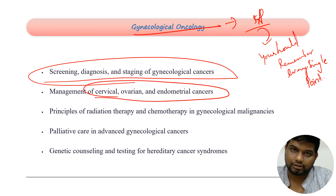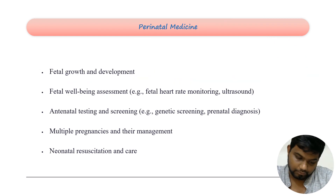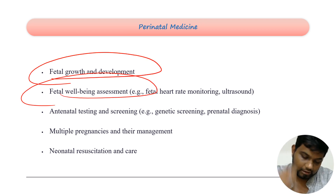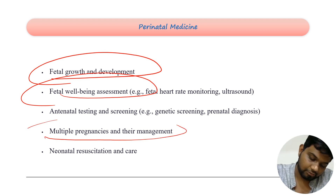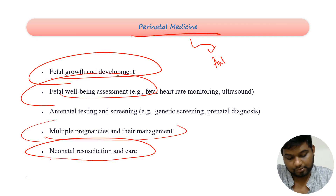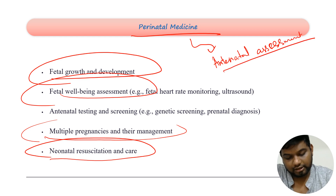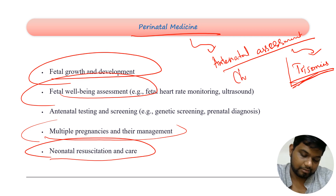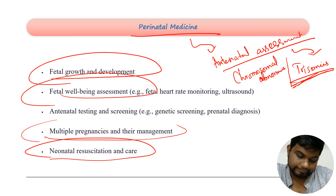In perinatal medicine, you need to know fetal growth and development, fetal well-being assessment, antenatal testing, multiple pregnancies and their management, neonatal resuscitation, and care. The very important area in antenatal assessment you should not miss is trisomies and chromosomal abnormalities — every detail about chromosomal abnormalities should be remembered.